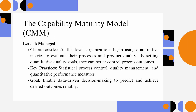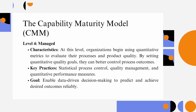Level 4 – Managed: Organizations begin using quantitative metrics to evaluate their processes and product quality. By setting quantitative quality goals, they can better control process outcomes. Key practices include statistical process control, quality management, and quantitative performance measures. The goal is to enable data-driven decision-making to predict and achieve desired outcomes reliably.